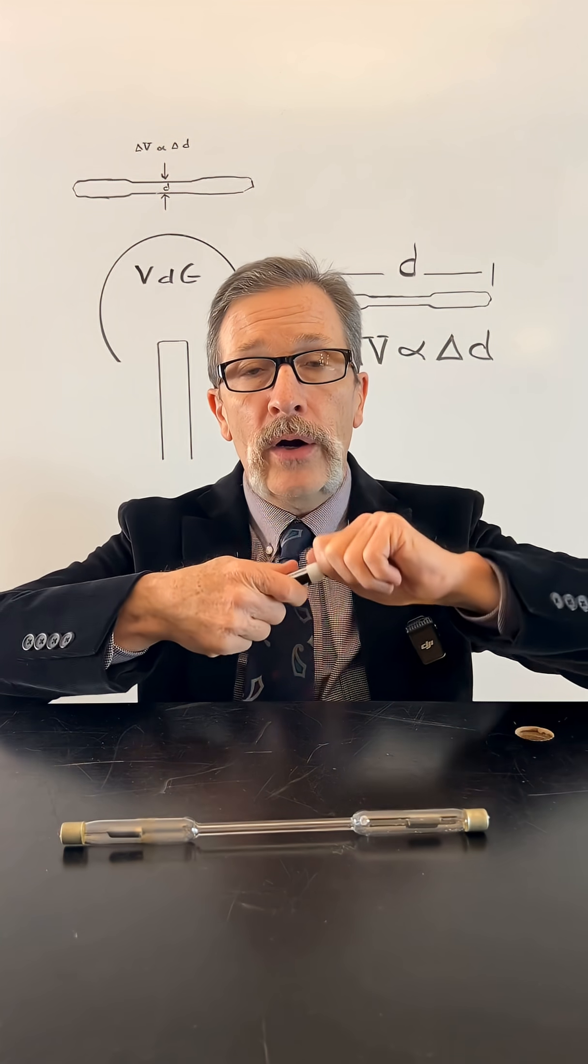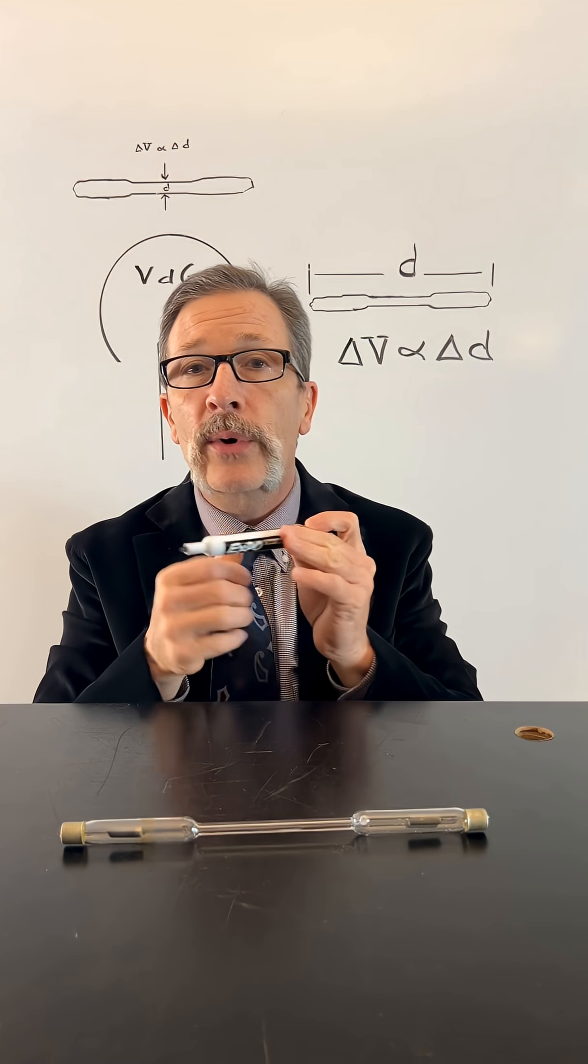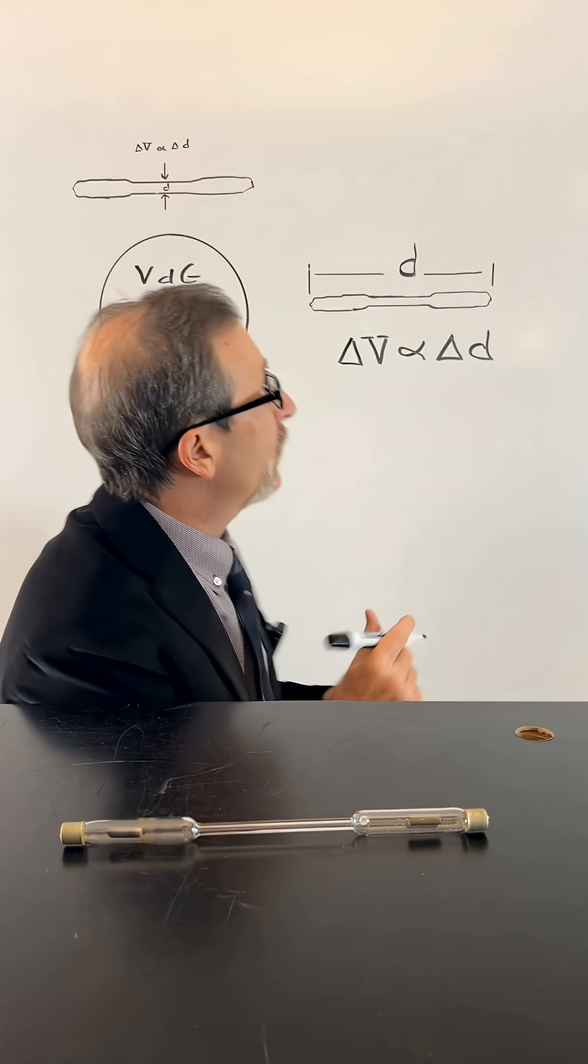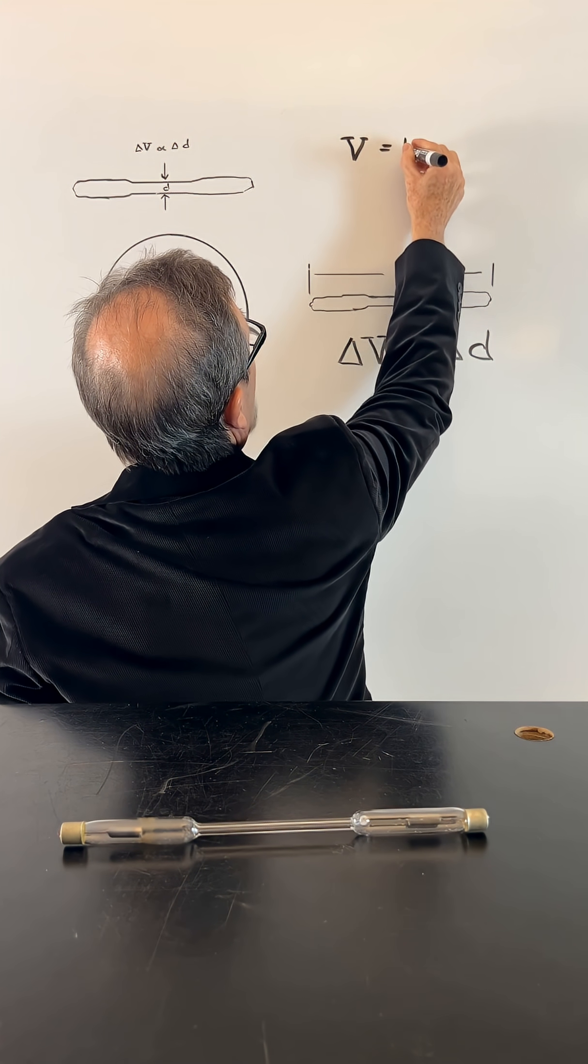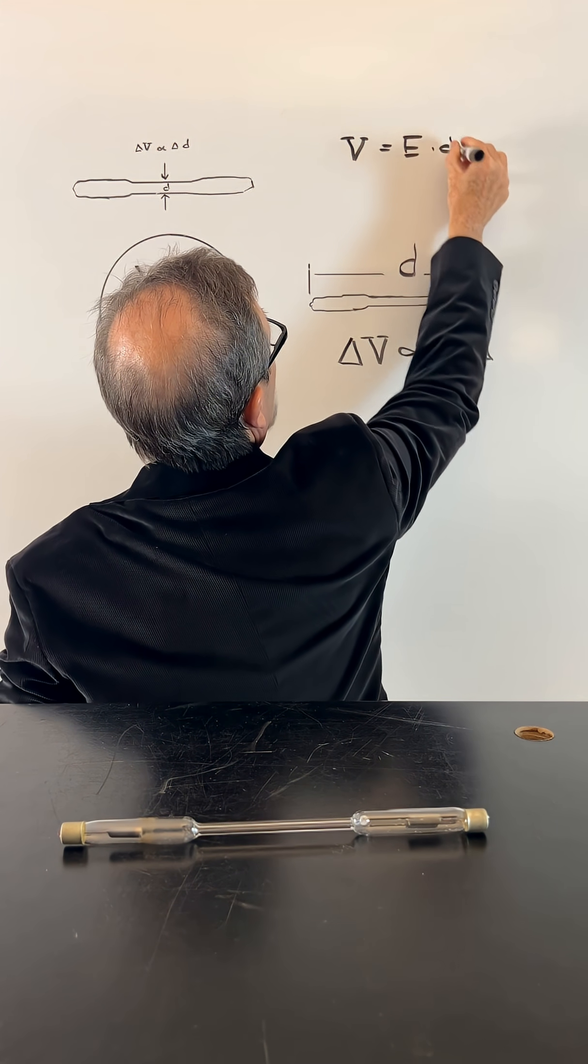Well, we know that our voltage is going to be related to our electric field times the distance. We can say our voltage is our electric field times our distance.